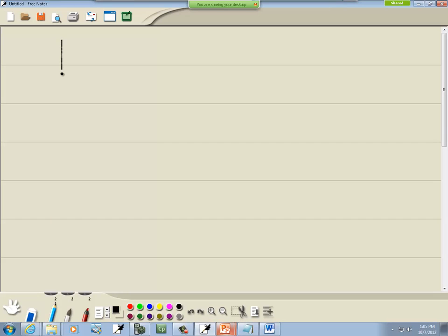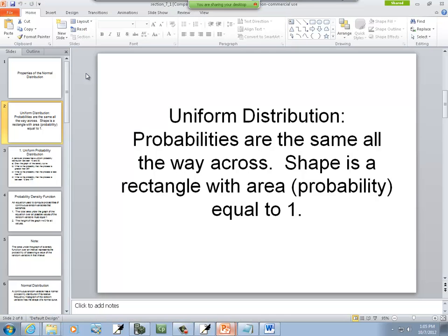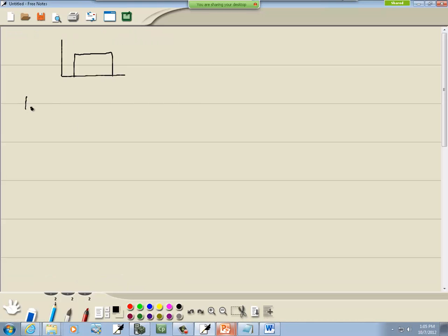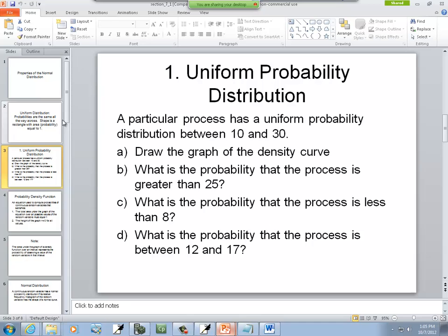We're talking about uniform. Our shape is going to be a rectangle. Like that. And again, area is equal to 1. And the area ties directly to our probability. Well, let's look at a problem here. This is a particular process. It has a uniform probability of distribution between 10 and 30. A says draw the graph.